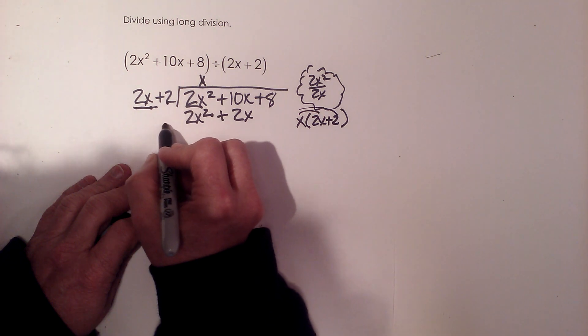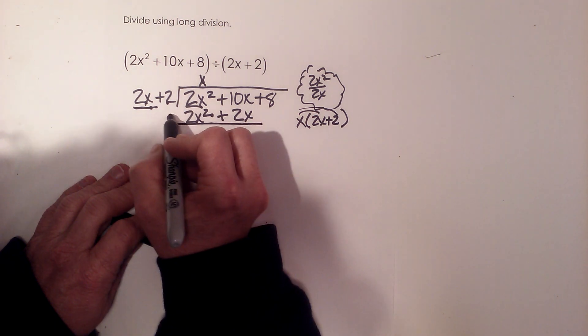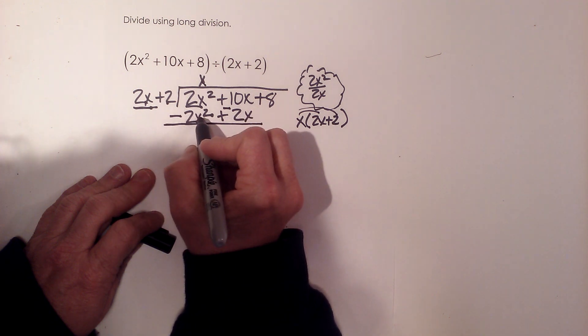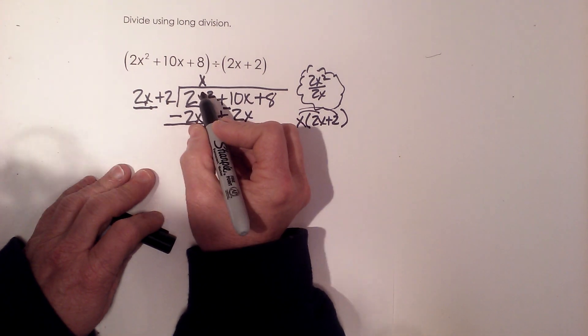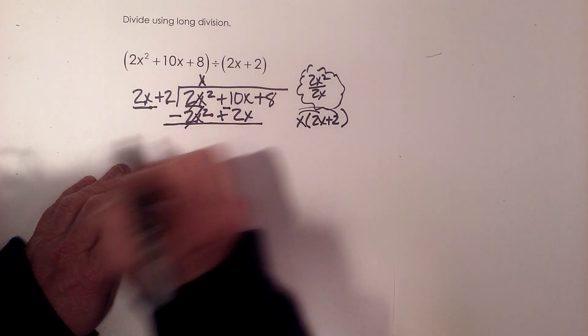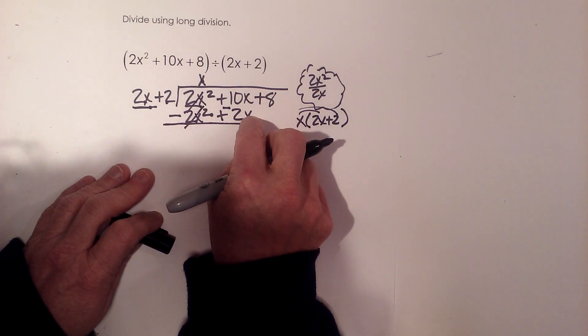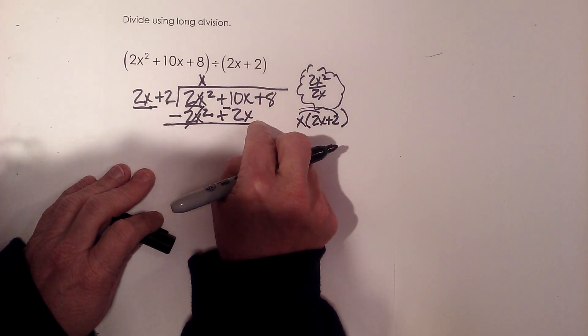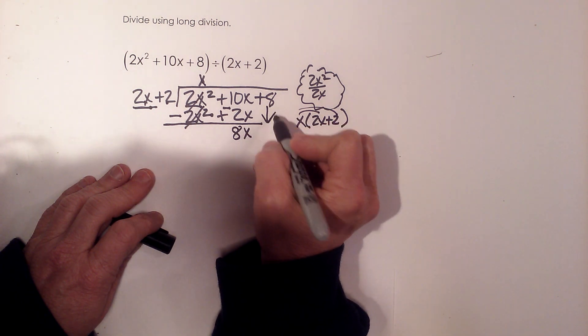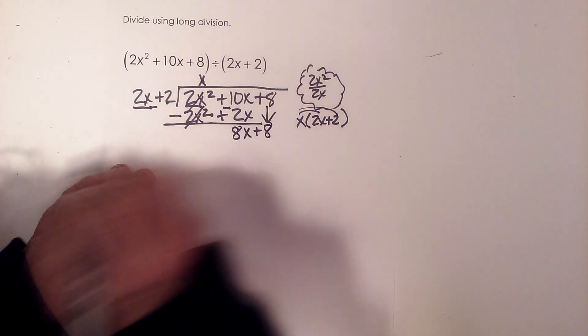Now I'm going to draw the line and change the signs of the product down here so that I can now add. It's the same thing as subtracting, but it's a little bit easier to draw the line, change the signs, and add so you don't make as many mistakes. Now I'm going to add my 10x and my negative 2x to get 8x. And just like in division, you're going to bring down the next term.